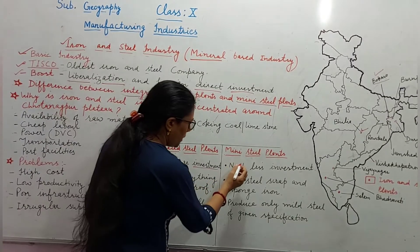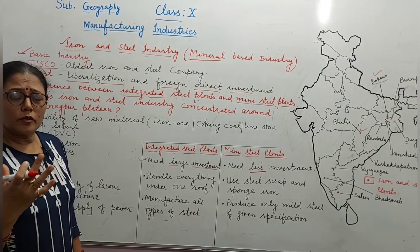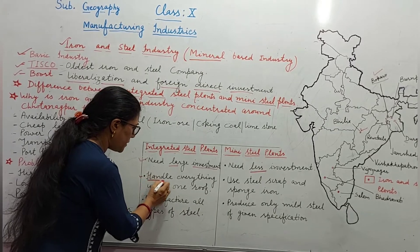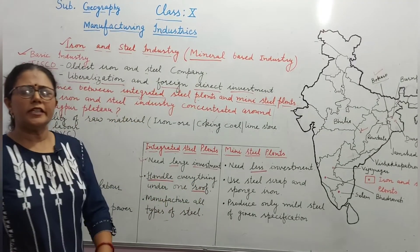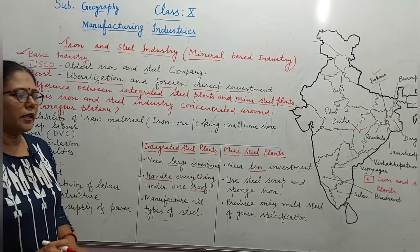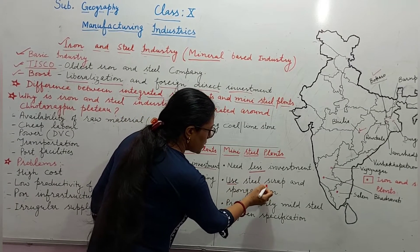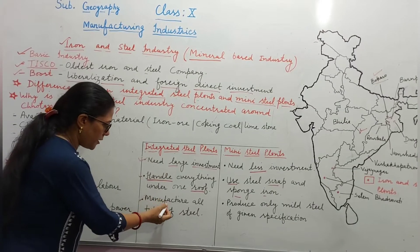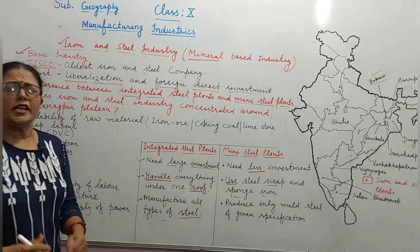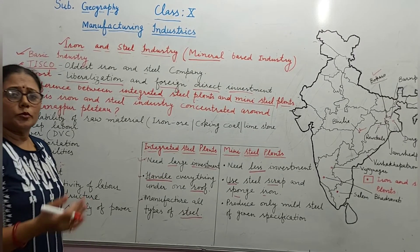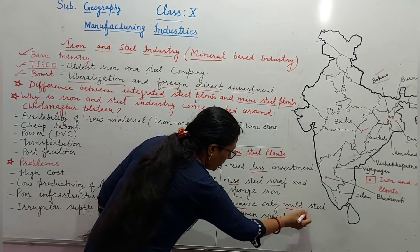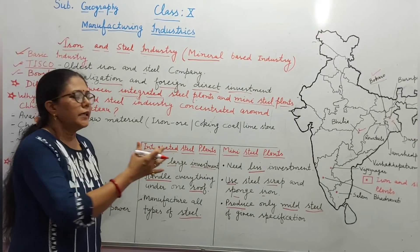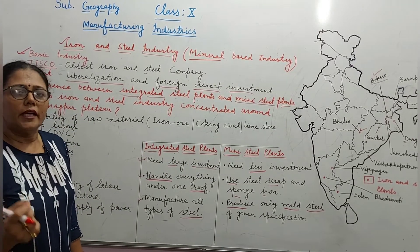Integrated steel plants handle everything under one roof at the same place, while mini steel plants use scrap and sponge iron. Integrated steel plants manufacture all types of steel, whereas mini steel plants produce only mild steel of a given specification. So we can understand that integrated and mini steel plants are quite different.